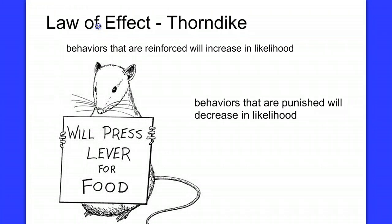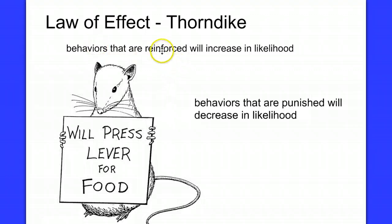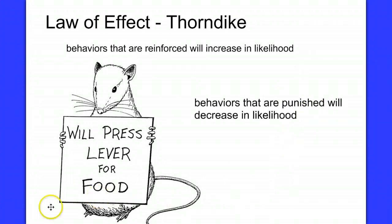We give it a name called the law of effect, and it's this law of effect that governs all of the processes within operant conditioning. A behavior happens, and it results in some consequence that either increases the likelihood of that behavior — making the consequence a reinforcer — or decreases the likelihood that the behavior would happen again, making the consequence a punisher.